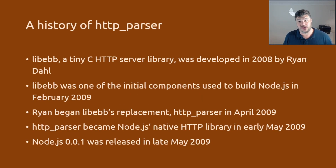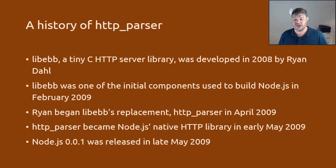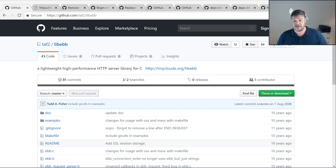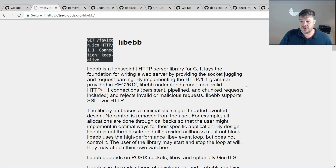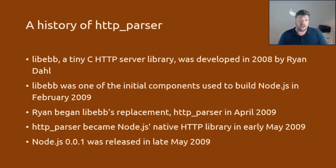At the beginning of Node — actually before the beginning of Node in 2008 — Ryan Dahl was experimenting with an HTTP server library called LibEBB, which he wrote in C. It's still available on the web. He seems to have removed his original, but there are forks around, such as one on GitHub. His website still has reference to it as well. LibEBB was written in 2008 and it formed one of the initial components of Node.js. Looking back at the very first commit of Node.js, it's the introduction of two sub-modules: LibEBB and another library for evented IO — and that was the beginning of Node.js.